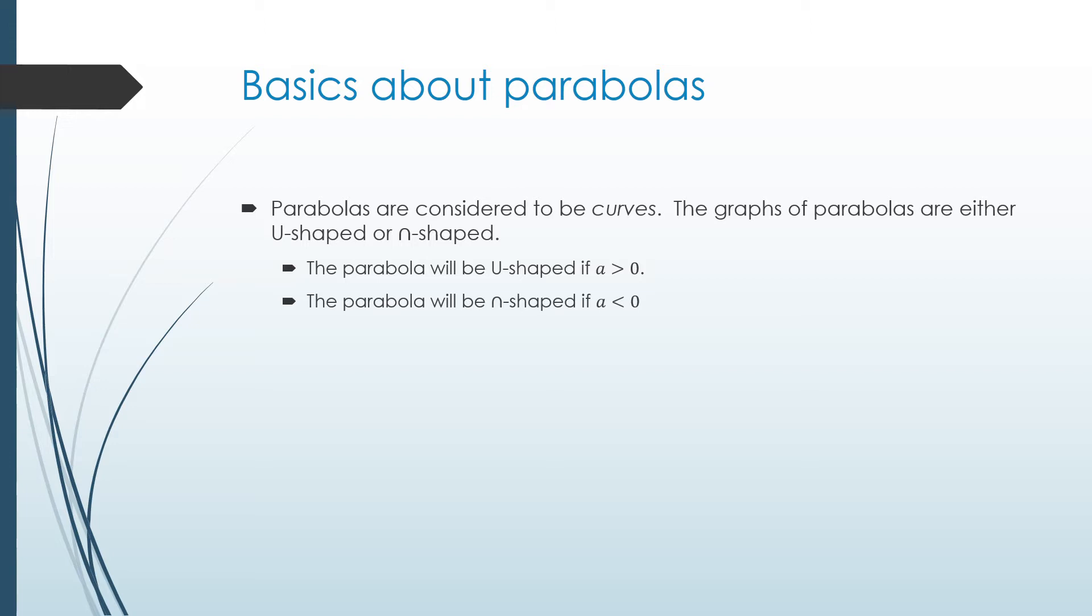The graphs of parabolas are either smile shaped or frown shaped. If the value of a in the function is greater than 0, meaning it's positive, the parabola will be smile shaped. Think about when you smile, it's when things are going positively. The parabola will be frown shaped when the value of a is negative.